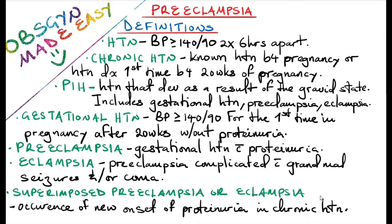Before we talk about preeclampsia, let's look at a few basic definitions. Hypertension is a blood pressure of systolic more than 140 and diastolic more than 90, measured two times at least six hours apart.